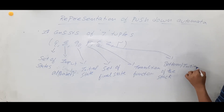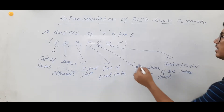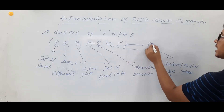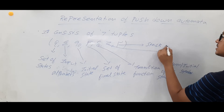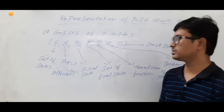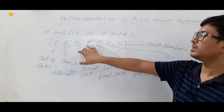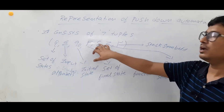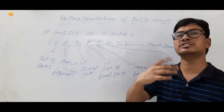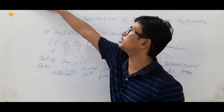Z is used to represent the bottom of the stack, also called the initial symbol of the stack. Tau is used to represent stack symbols. So to summarize: the seven tuples are set of states, input alphabets, initial state, set of final states, transition function, bottom of the stack symbol, and stack symbols.